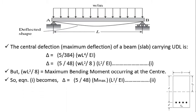So equation 1 becomes Δ = (5/48) M_max (L²/EI), equation number 2, where M_max is maximum bending moment or maximum moment of resistance. We know that from pure bending theory, M/I = σ/y, where M is moment of resistance, I is moment of inertia of the section - for example, if it is a rectangular section then it is BD³/12 where B is the width and D is the depth. Sigma is the bending stress.